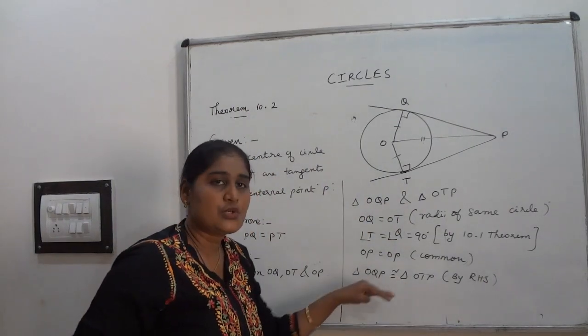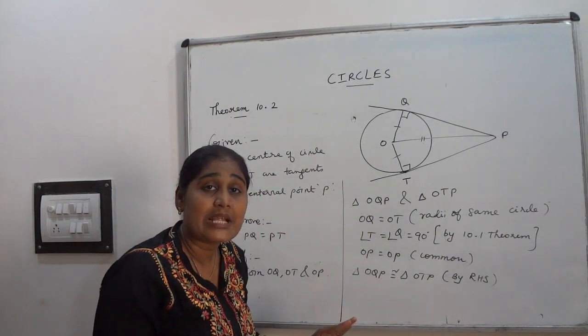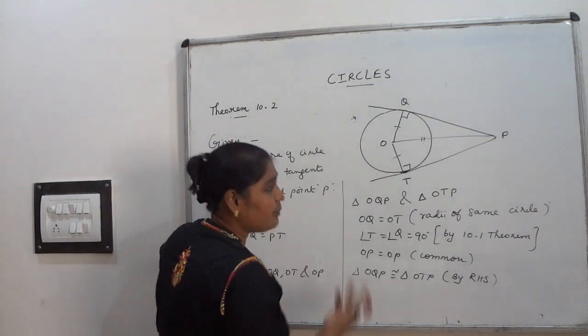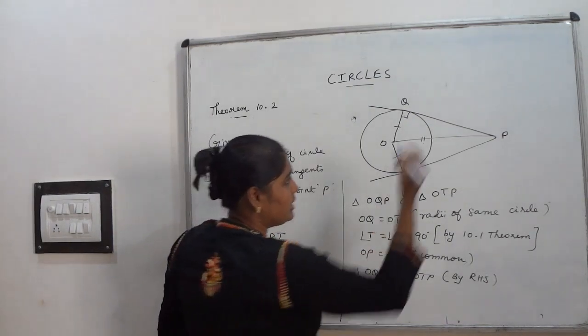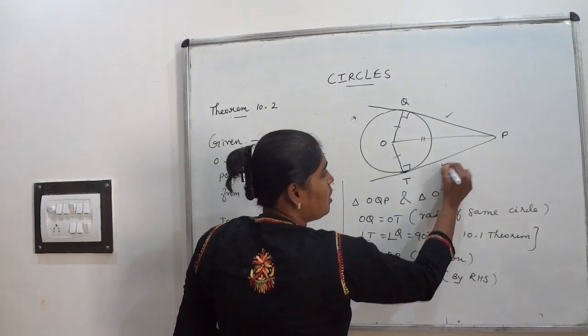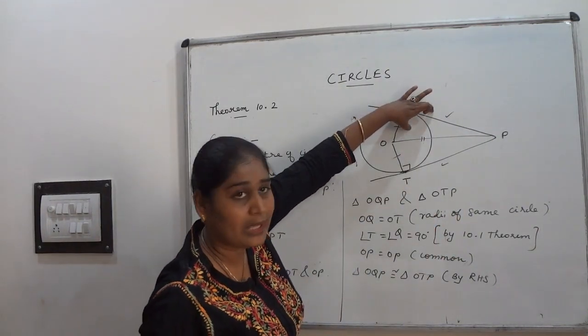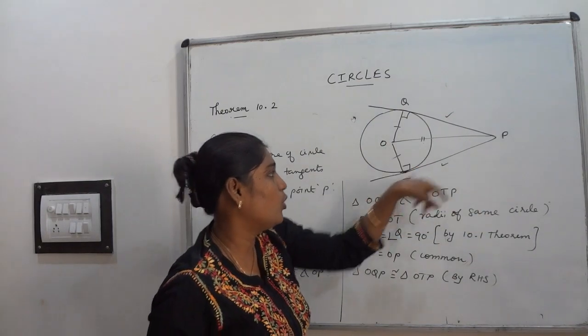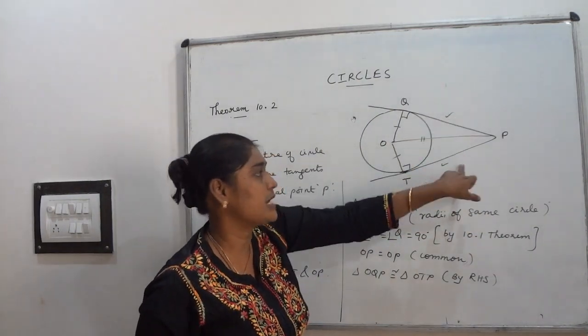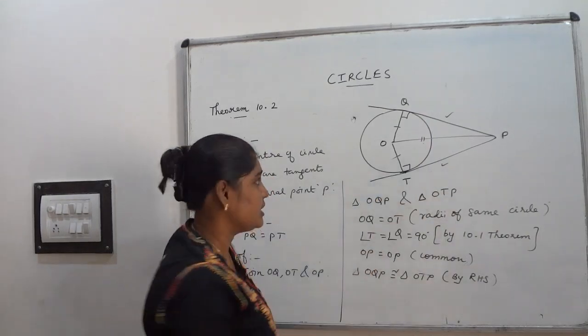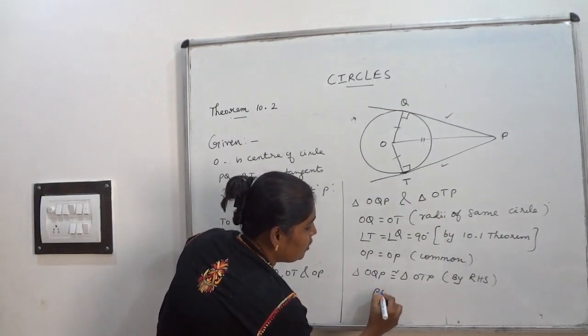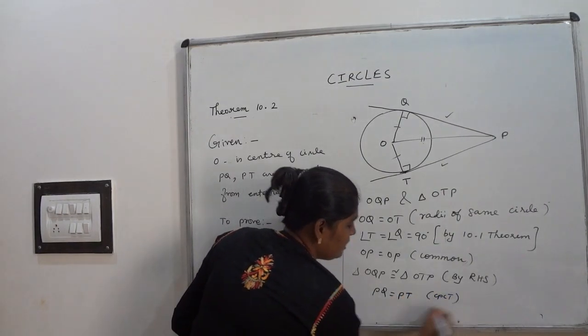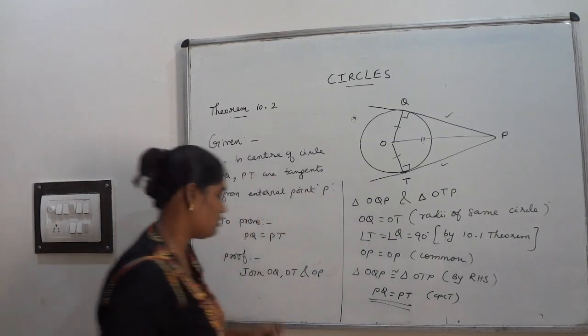Once I have proved these two triangles are congruent, the remaining sides will be equal by CPCT I already told. So what are the remaining sides in these two triangles? Let us see. PQ equal to PT. PQ in this triangle OQP and PT the side in a triangle OTP. So these two sides are equal by CPCT.